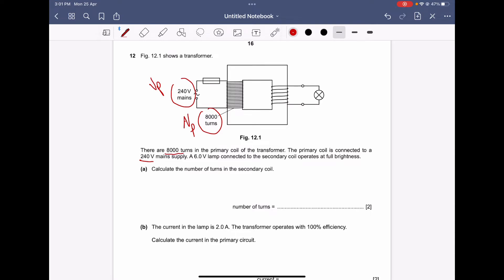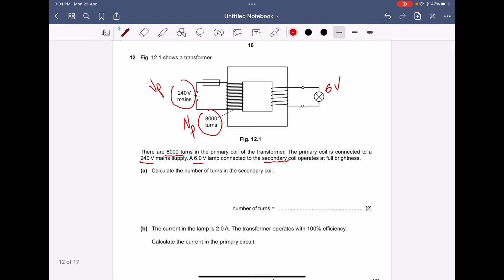And the six volt lamp, which is the voltage across the secondary coil, operates at full brightness. Calculate the number of turns in the secondary coil.